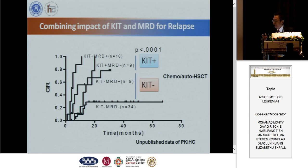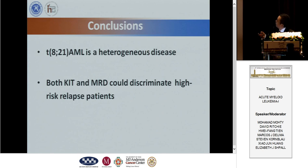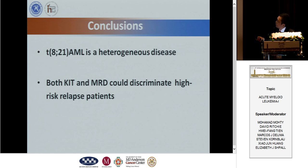Based on this, we can conclude from the literature that t(8;21) translocation is actually a heterogeneous disease, and that post-sequencing and MRD can identify the high-risk relapse patient.